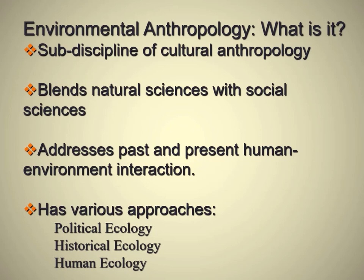Historical ecology looks at the long-term human-environment interaction in different societies throughout space and time. The goal is to understand the cumulative effects of human-environment interaction over time. For example, up to 20% of the Amazon rainforest is now considered anthropogenic, meaning human-created. Small-scale societies that lived in Amazonia in pre-Columbian, pre-colonial times modified the Amazon on a large scale by planting specific species useful for food and altering the soil to make it more fertile.